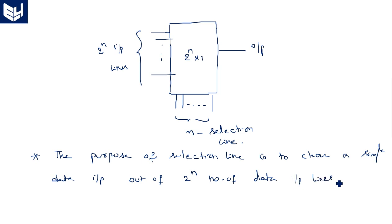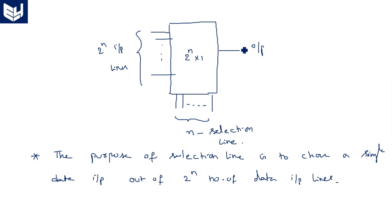For example, suppose I want to send the 10th data to the output out of these 2 power n input lines. I set the selection lines equal to 10, and then the 10th line's data will go to the output — y will equal whatever data line 10 carries, whether it is 1 or 0.